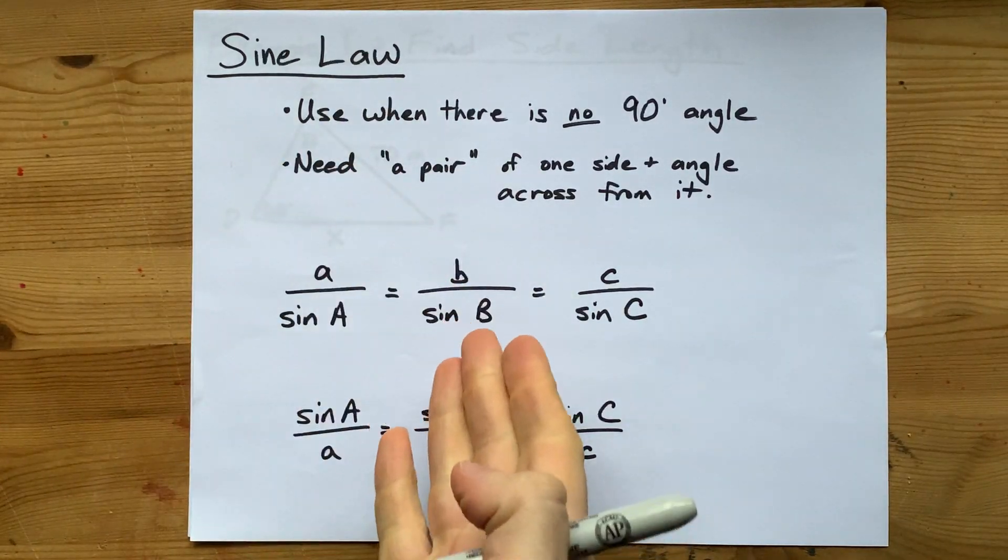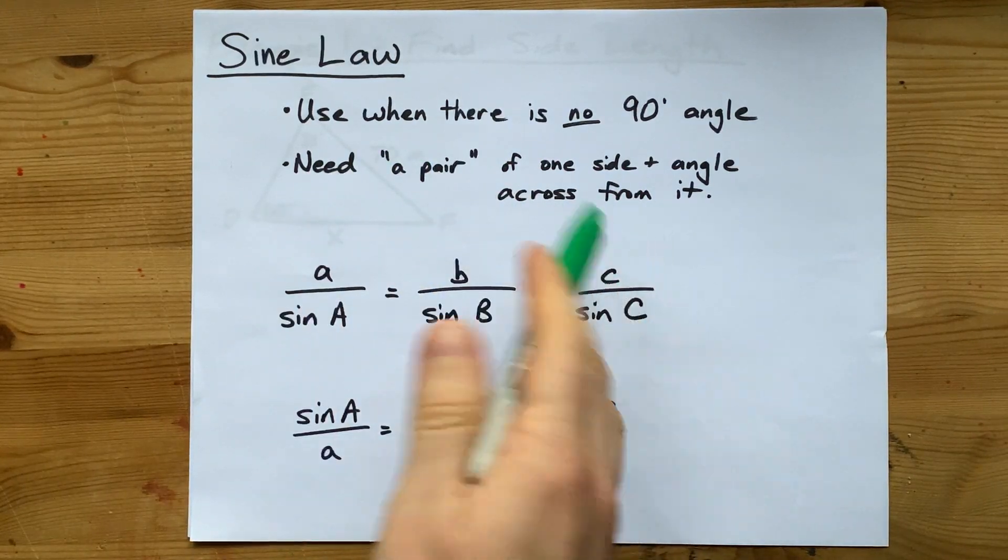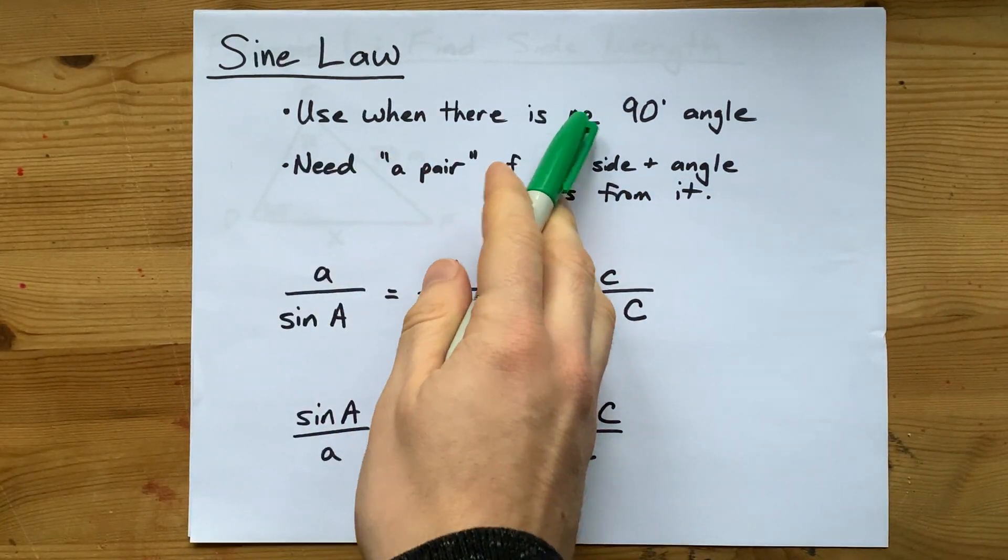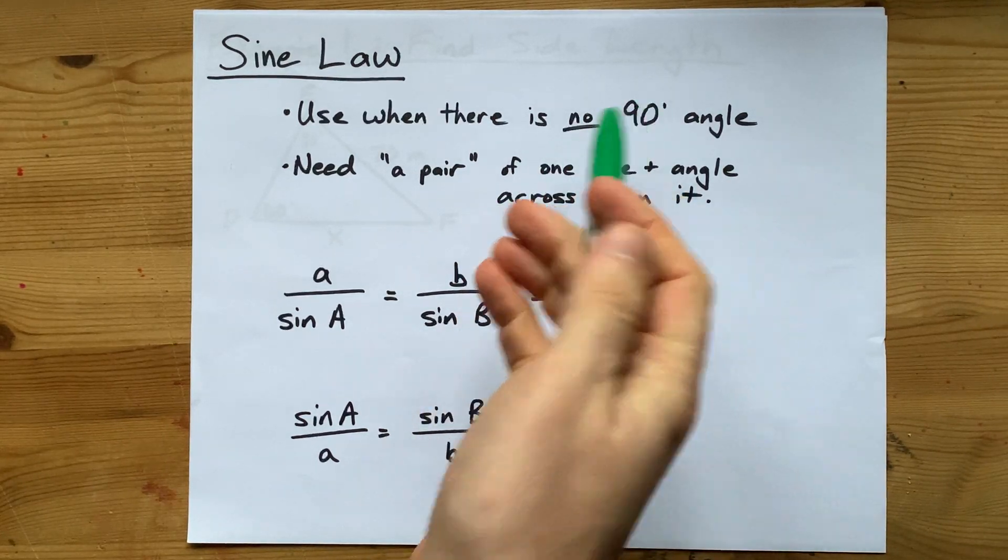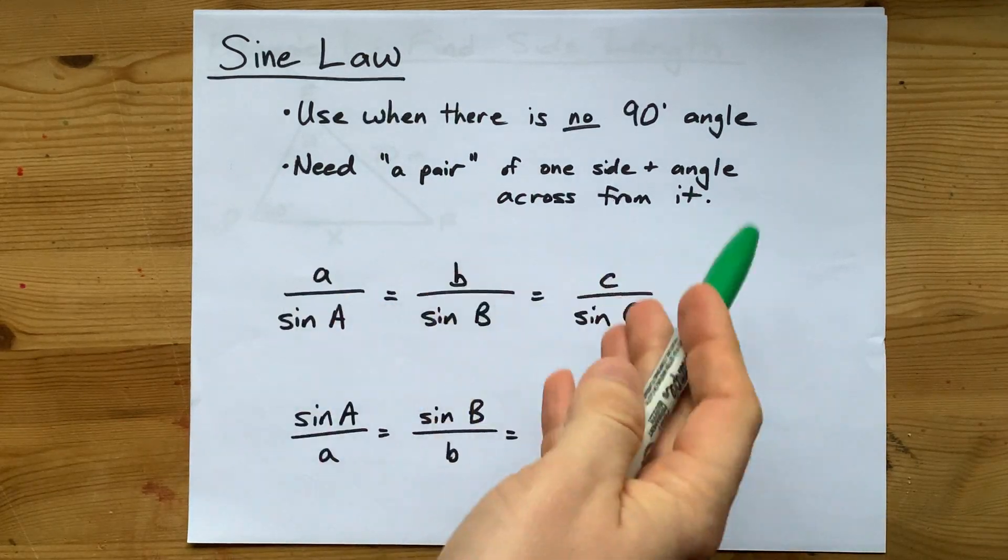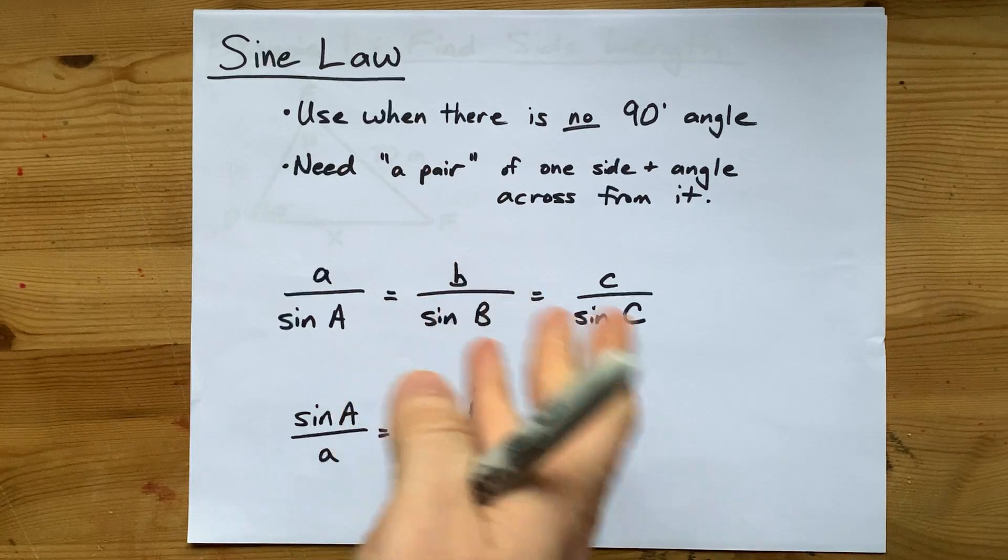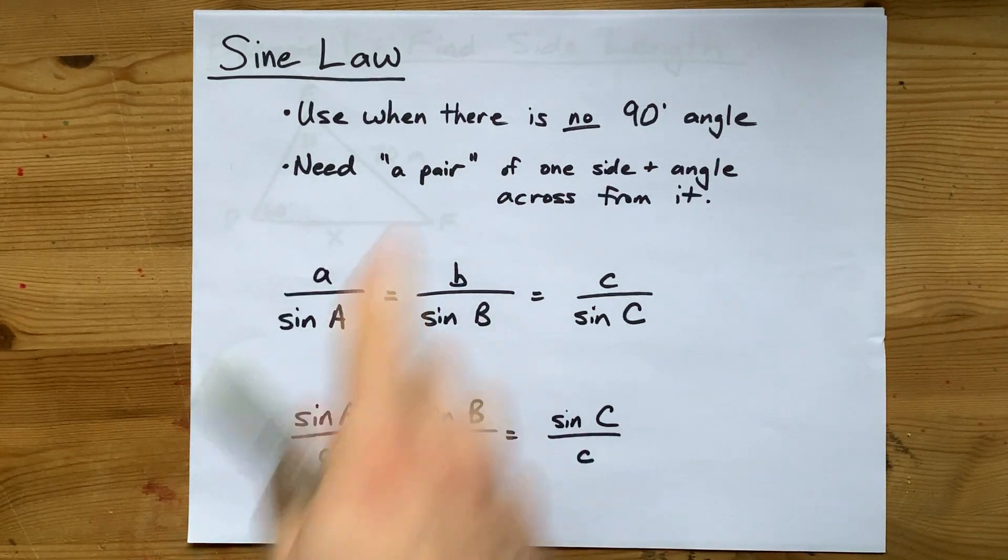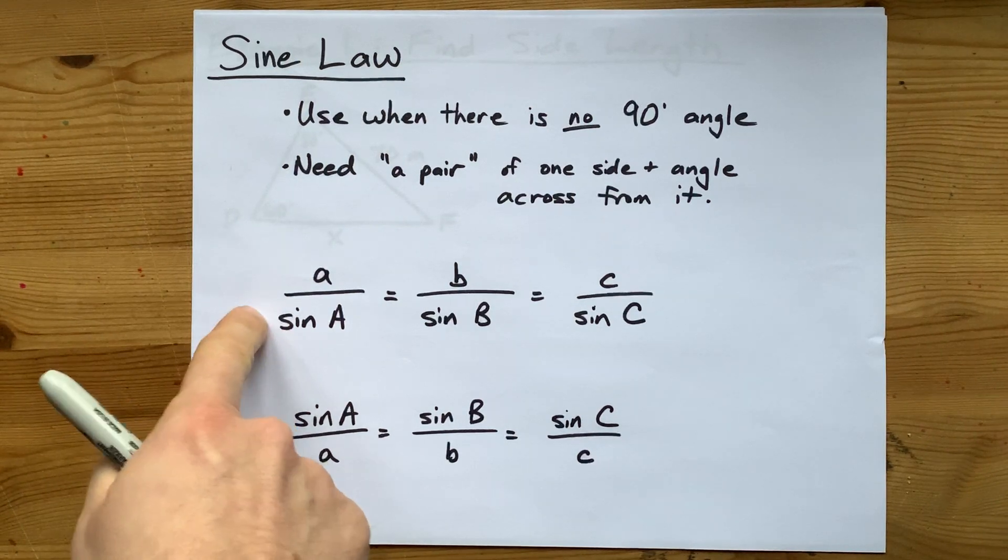The sine law is a formula we use when you're trying to find an angle or a side in a triangle that does not have a 90 degree angle in it. If there is a 90 degree angle somewhere in the triangle, you can use regular sine, cos, or tan, or SOHCAHTOA and just set up an opposite adjacent hypotenuse ratio. But when there's no 90 degree angle, you're going to need a different formula.